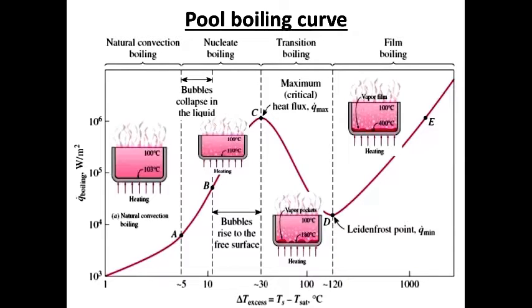When a liquid is in contact with a surface maintained at a temperature above the saturation temperature of the liquid, boiling will eventually occur at that liquid-solid interface. Based on the relative bulk motion of the liquid to the heating surface, the boiling is divided into two categories: pool boiling and convective boiling.